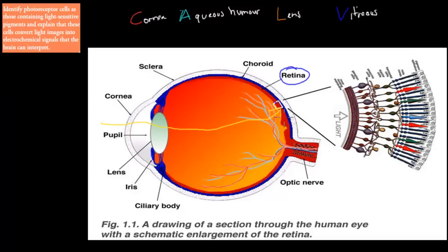Now we're going to talk about what light actually does once it gets in, because the dot point says: identify photoreceptor cells as containing light-sensitive pigments and explain that these cells convert light images into electrochemical signals that the brain can interpret. So there are a couple of points there, but this is a fairly straightforward dot point.